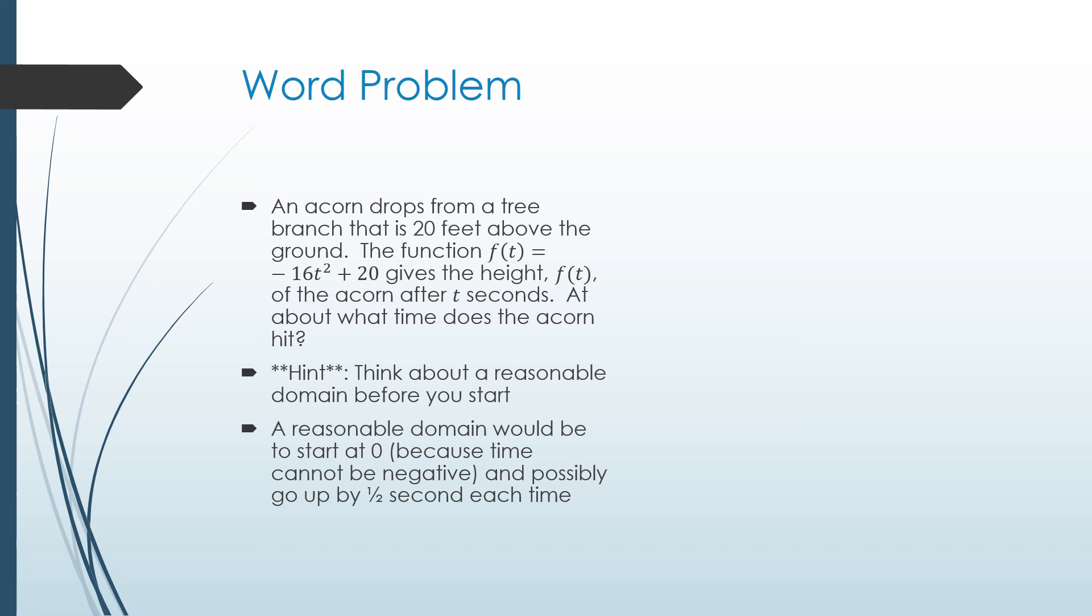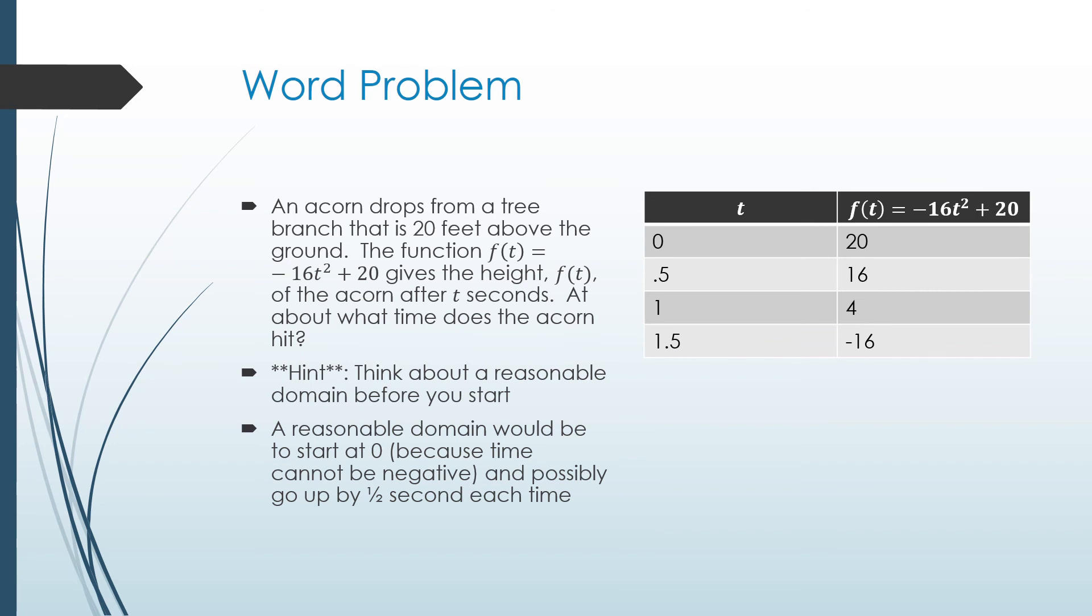I'll go up by half a second each time to get a value. Here's my chart: when time equals zero, the acorn is 20 feet above the ground. At time equals a half, it's at 16 feet above the ground. When one second is reached, it's four feet above the ground. And when I get to 1.5 seconds, it has now gone down to negative 16 feet. Well, that would mean that it fell through the ground, so obviously at some point it hit zero feet, which means it hit the ground. Negative height in this case does not make any sense. Therefore, we can say the acorn hits the ground at zero feet just after one second. If you're having any issues with this particular lesson, please make sure you consult your teacher in class.